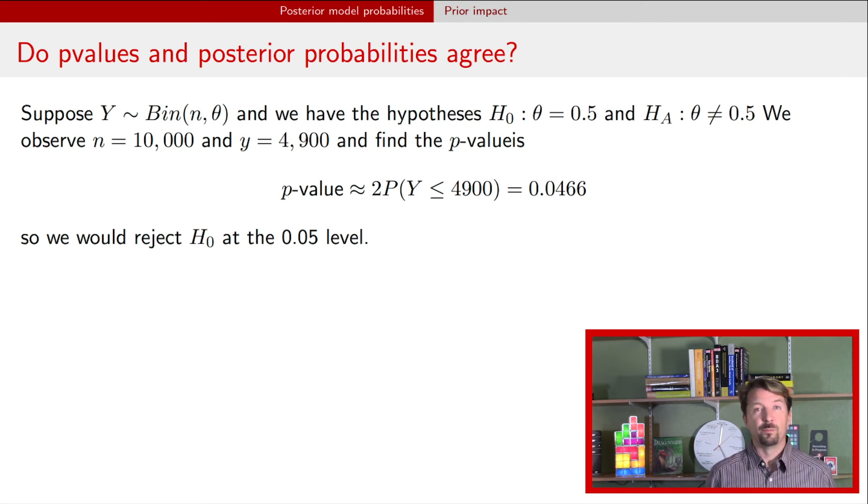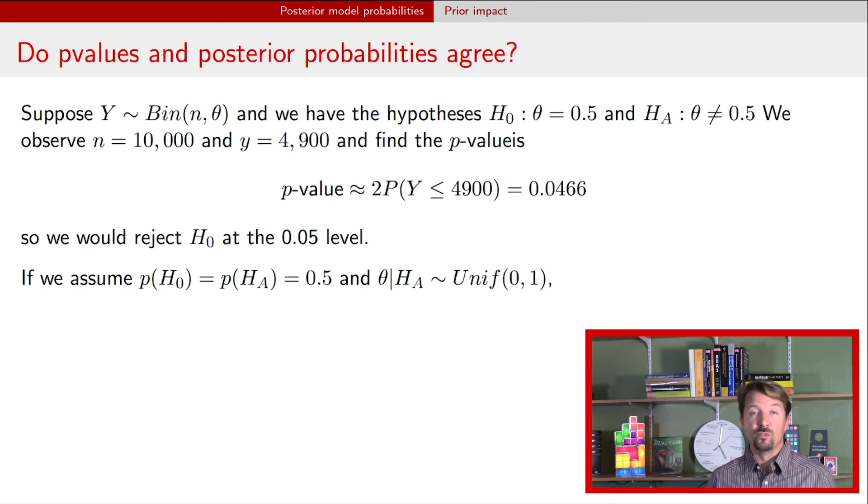But now if you turn around and do a Bayesian approach, first off, we need to have a prior over our model. So let's just make those 50-50. And then we also need a prior over the parameters in our alternative model where we haven't specified exactly the value for the parameter. Let's just assume a uniform distribution over probabilities.